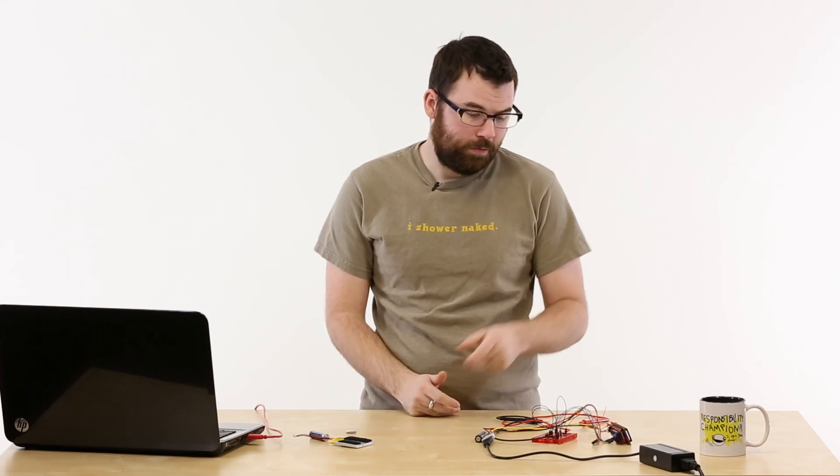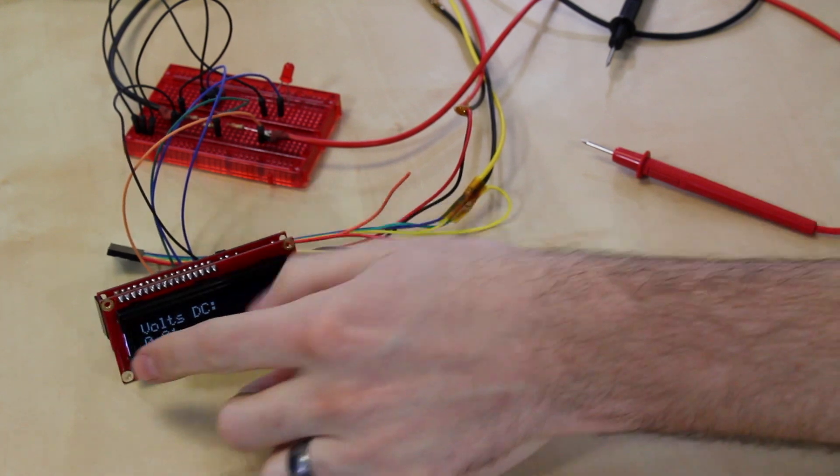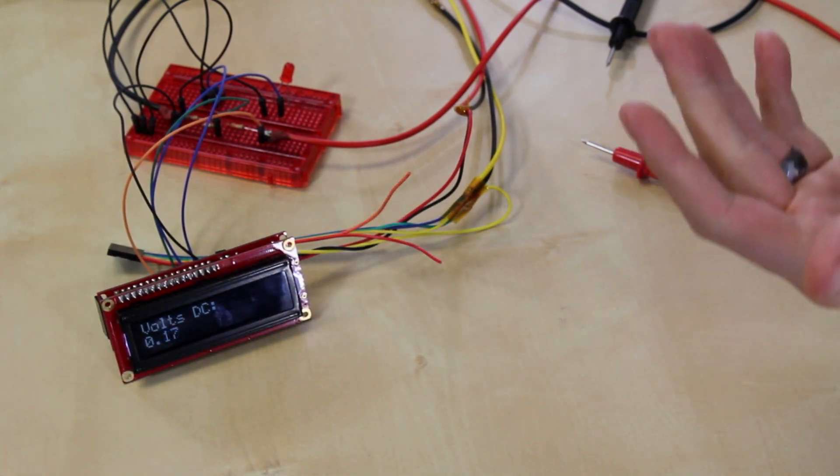So first up, we've got the Serial LCD configured as basically a little bit of a multimeter. We've got the continuity tester and a voltage meter. On the screen here, you can see that it's measuring about zero volts DC.